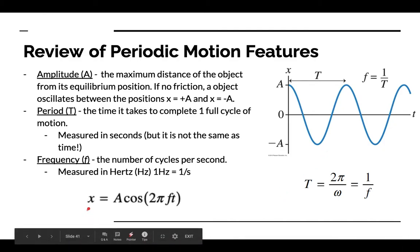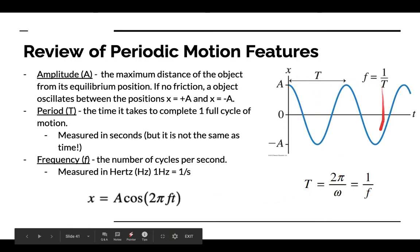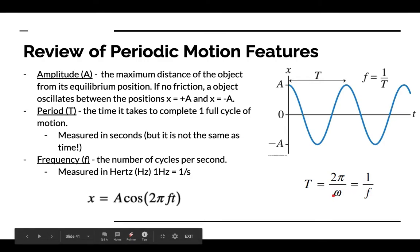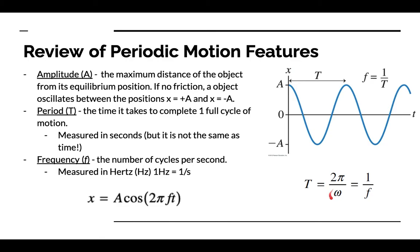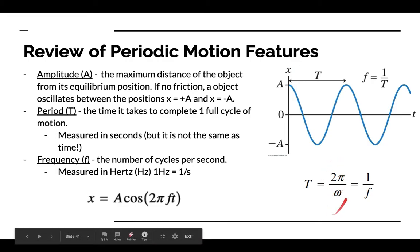Our equation of motion is X equals A cosine of 2 pi frequency times our time. T equals 1 over F, or 2 pi over our angular frequency, which is a very subtle but not very common thing that appears on the exam — hence it's not really worth worrying about too much. In order to use X equals A cosine 2 pi F T, you need to know A and F. Or to graph from this, you graph A and then figure out your period T from F.